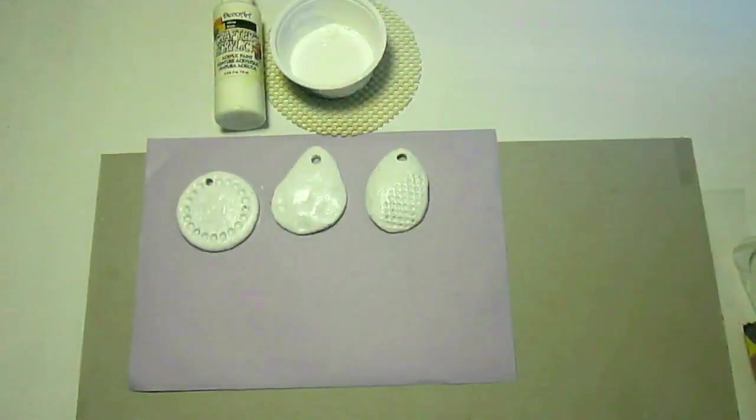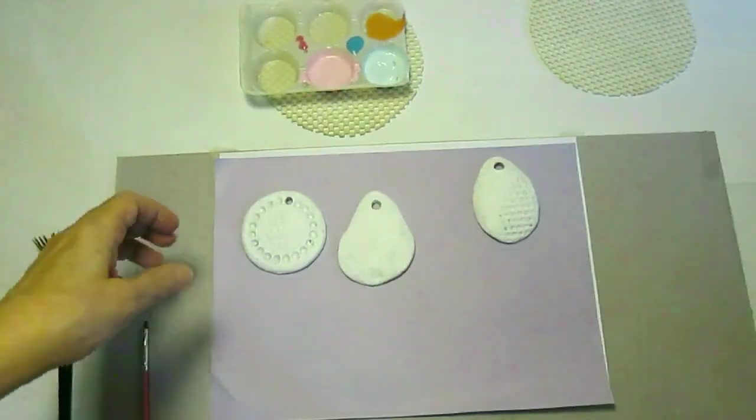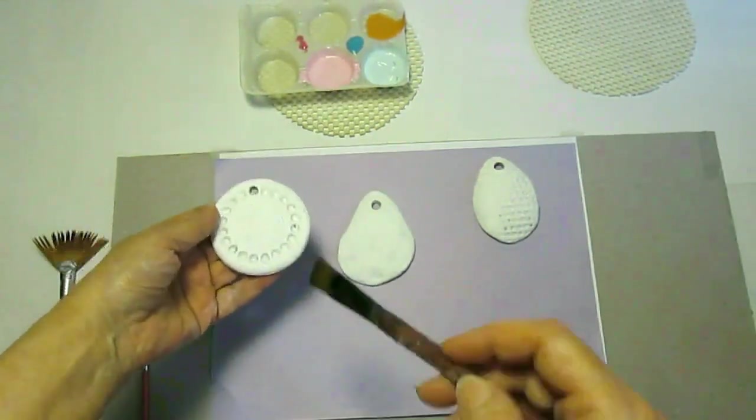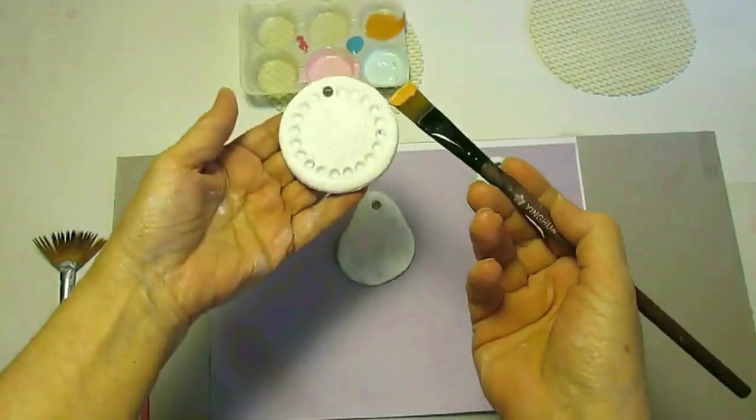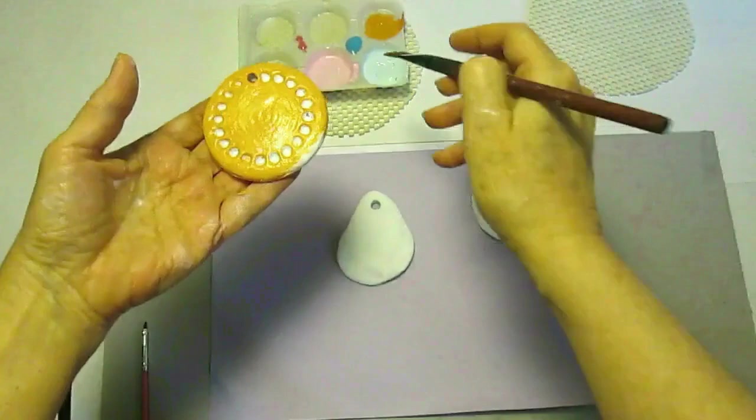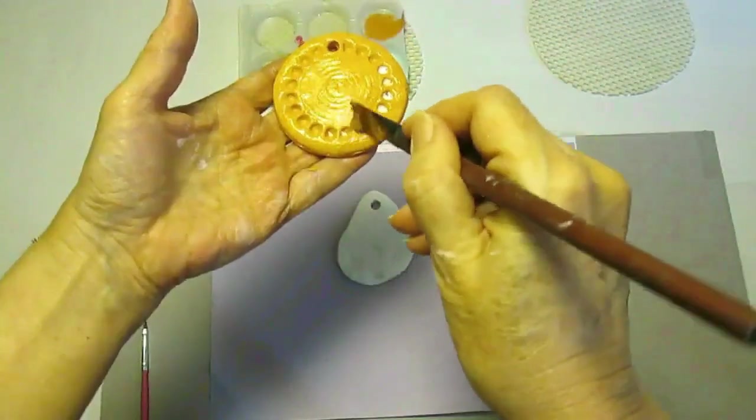Now when the base white color is dry I am going to apply chosen color for each of these pendants. For this one I chose terracotta color and I go around. You will need a very little amount of the paint.